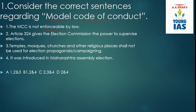Article 324 gives the Election Commission the power to supervise elections. Temples, mosques, churches and other religious places shall not be used for election propaganda and campaigning — that is correct. One statement says it was introduced in Maharashtra assembly elections — that is wrong. It was actually introduced in Kerala assembly elections. So the correct option will be A.